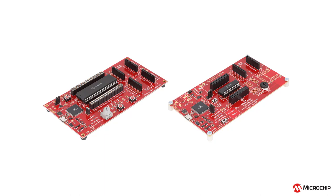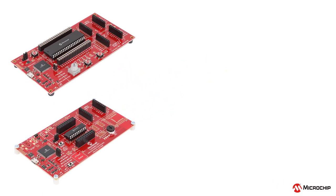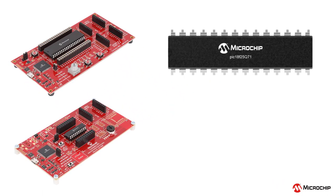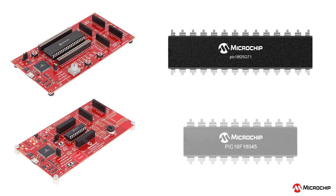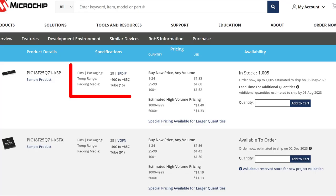First, you will want to choose the microcontroller you wish to develop with. In this example, we will be demonstrating the PIC18 F25 Q71 for the HPC board, and the PIC16 F18045 for the LPC board. When selecting a part, be sure to select a DIP package with the correct pin count to ensure compatibility with your board.